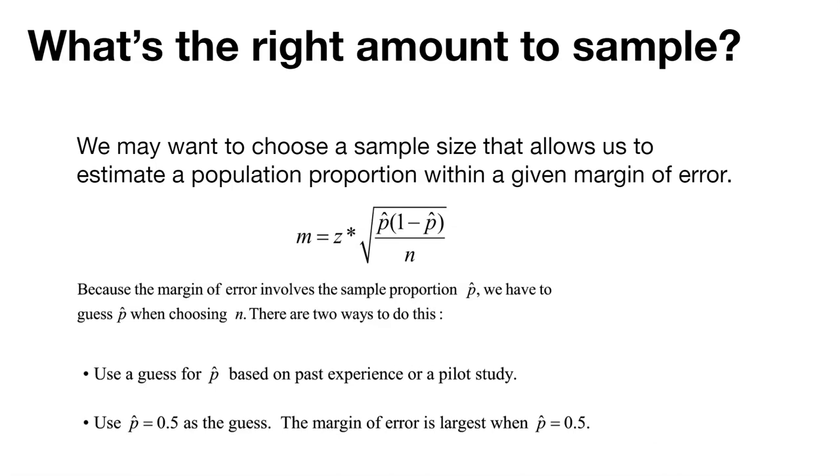Just like we talked about with other examples, we want to find out what the right amount to sample is. We want to choose a sample size that allows us to make an estimate of the population proportion with some margin of error. We're going to denote that margin of error using m.